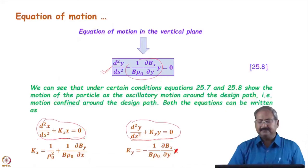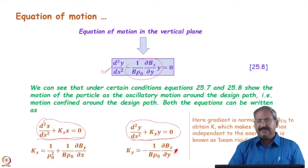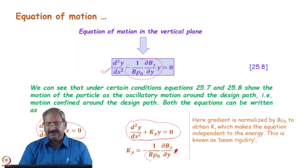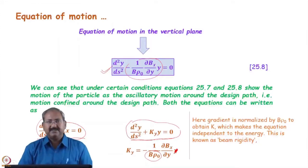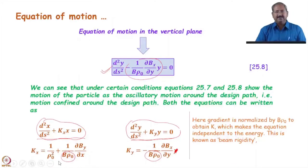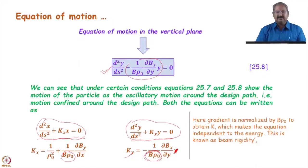Note that the y term should not appear in the horizontal equation. As you can see, Bρ₀ appears in the denominator in both kx and ky, meaning these strengths are normalized by the momentum, so the optics description using these strengths becomes momentum independent. For example, for a 2 GeV beam we use certain kx and ky values, and when the accelerator is tuned to 4 GeV the same kx and ky are used. We simply substitute the appropriate Bρ₀ value to get the required gradient for that energy.